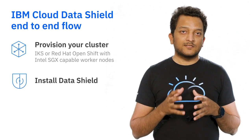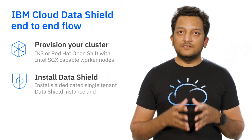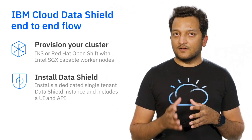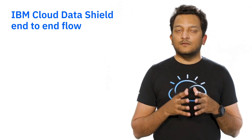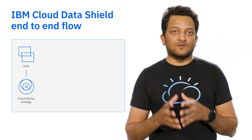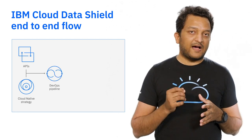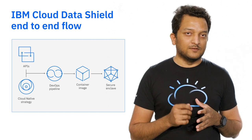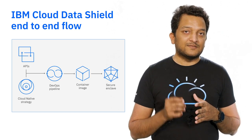Next, you install the Data Shield Helm chart on your cluster. This installs your own dedicated single-tenant Data Shield instance on your cluster, which includes a UI and an API. The API seamlessly aligns with your cloud-native strategy and integrates with your DevOps pipelines to convert your container images to Intel SGX-capable, secure-enclave counterparts, using industry-best runtime encryption technology from Fortanix.